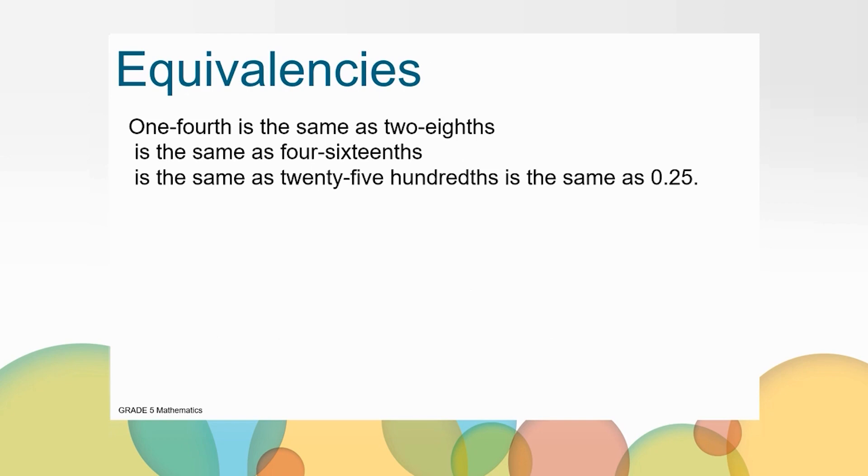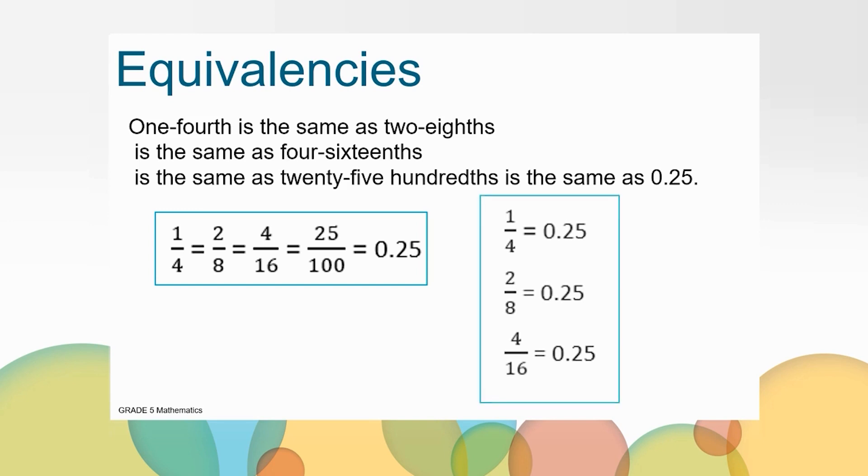What we have proved is that one-fourth, two-eighths, four-sixteenths, and 25 hundredths are all equivalent. Because the denominator is 100 in the number 25 hundredths, that means we can easily write the decimal for the fraction. But this also means that one-fourth is equal to 25 hundredths. Two-eighths is equal to 25 hundredths. Four-sixteenths is equal to 25 hundredths. That's why I love fractions, because you can represent the same value so many different ways.